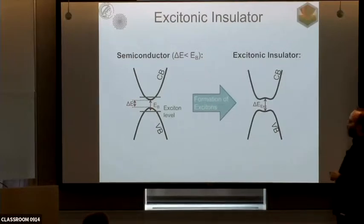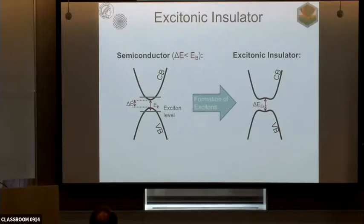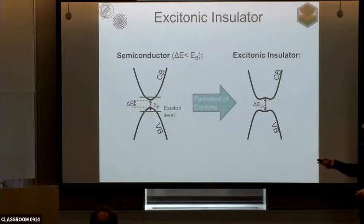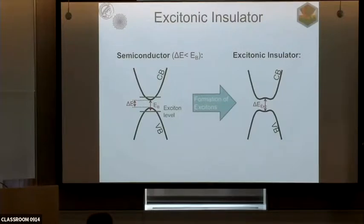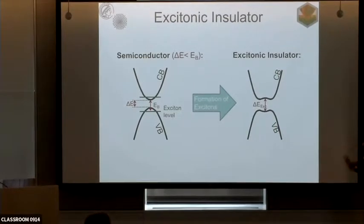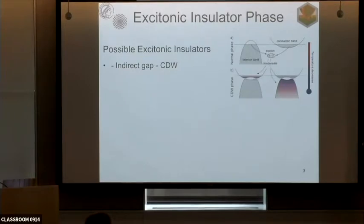We are dealing with a situation where we have a small band gap semiconductor or small bandwidth semi-metal where the exciton binding energy is larger than the band gap or bandwidth. This allows formation of excitons and this opening of characteristic band flattening, and then at low temperatures these systems — in a BCS-type fashion on the semiconducting side — could potentially condense, forming this elusive state of the excitonic insulator.